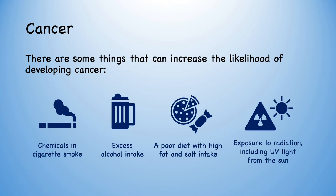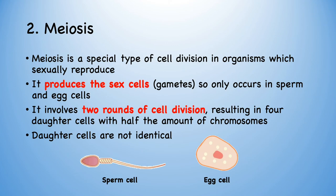Here's the second type of cell division, called meiosis. It's a special type of cell division in organisms which sexually reproduce, such as humans. It produces the sex cells, or gametes, and only happens in the egg and sperm cells. Importantly, it involves two rounds of cell division, resulting in four daughter cells with half the amount of chromosomes each. Therefore, these daughter cells are not identical.